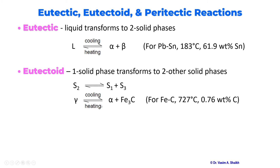In the iron-carbon system, when we cool the gamma phase, we form alpha ferrite and iron carbide at this particular temperature. In the next slide, we will look at an example from a different phase diagram — not the iron-carbon phase diagram, which I have already discussed in an earlier video — where we will study the eutectoid reaction. Cementite here is an intermetallic compound, just for information.